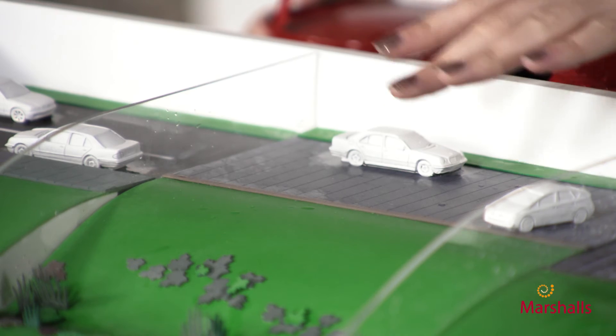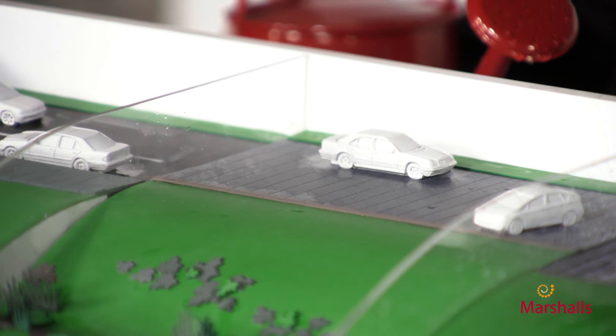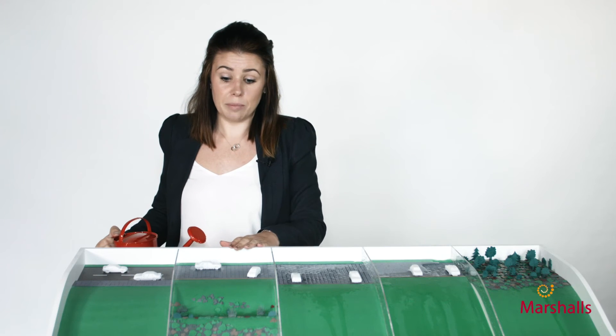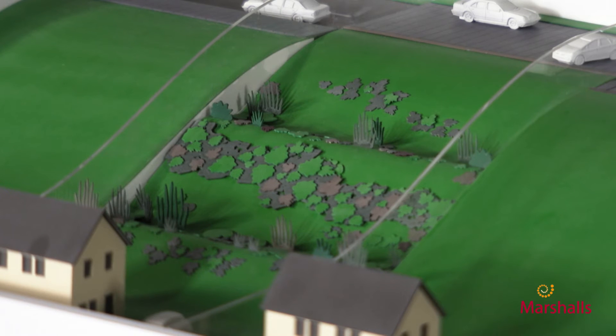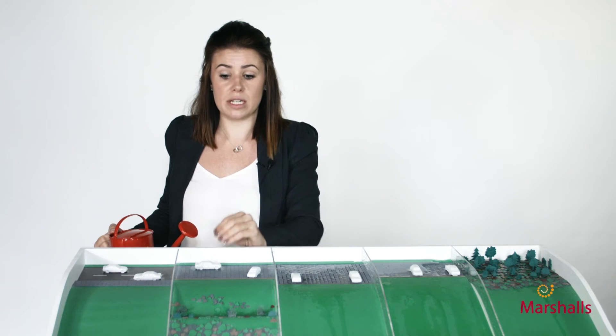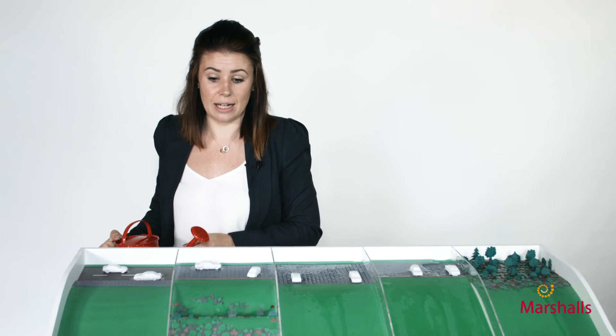Another solution which we've got is soft SUDS. Now the example here today is a swale, and basically the idea is that it's designed so it collects the water in a bit of a reservoir and it'll naturally soak into the ground very slowly, and again this stops flooding downstream.